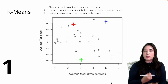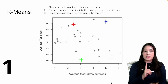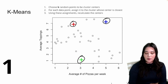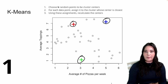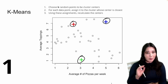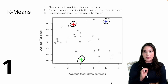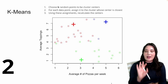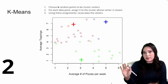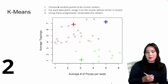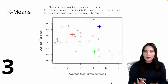Randomly selected data points are probably not going to be the greatest cluster centers, so we improve them. In step two, we look at those cluster centers and assign every single data point to whichever center it is closest to. On the graph you can see that data points are now colored indicating which center they are closest to. But we're not going to stop there.